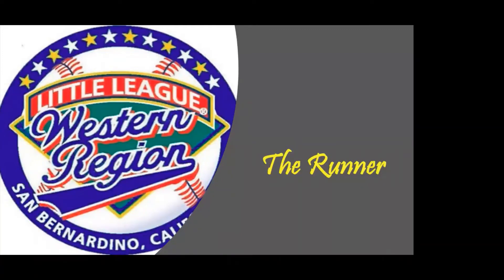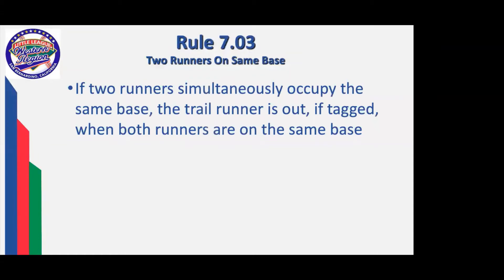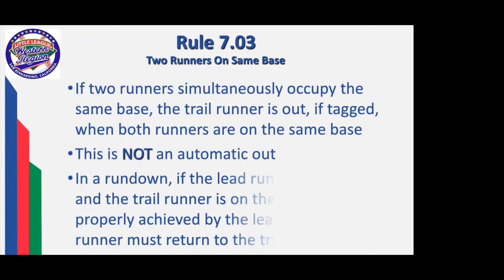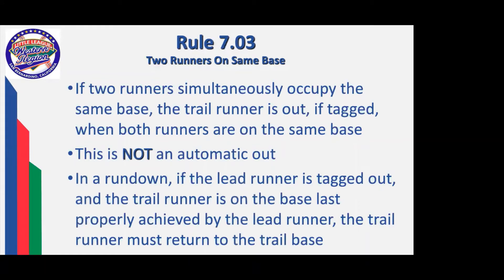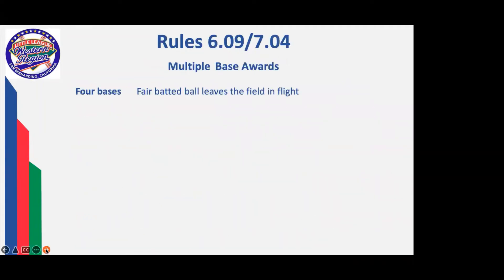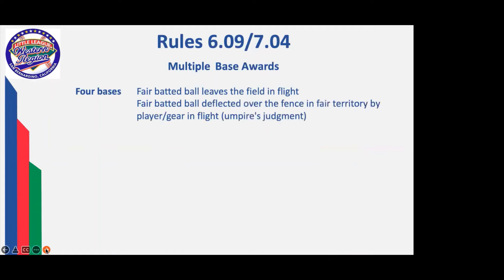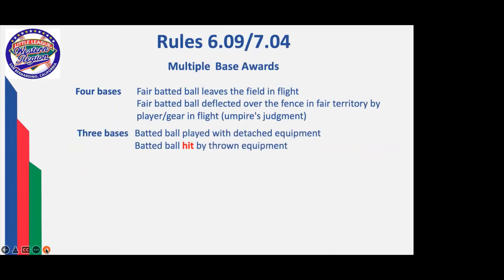We move next to the runner. If two runners simultaneously occupy the same base, the trail runner will be out if both runners are on the same base and the trail runner is tagged while they're both on the base. This is not an automatic out. And if we end up in a rundown and the lead runner is tagged out and the trail runner is on the base last properly achieved by that lead runner, the trail runner must return to the trail base by umpire's direction. This slide and the next is a summary from rule six and rule seven of the four, three, two, and one base awards for various situations.